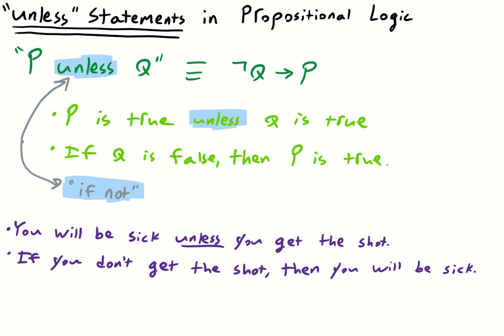So notice that what follows the unless, you get the shot, that becomes part of the antecedent, but we negate it. So we have that don't. If you don't get the shot, then you will be sick. Don't let the order confuse you. So here we have, you will be sick, that's the consequent. You get the shot, the negated form of that is the antecedent.